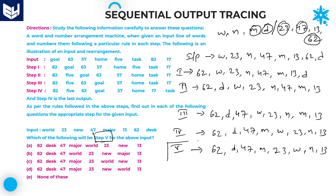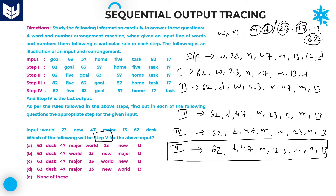This is our required answer for step 5: 62, desk, 47, major, 23, world, new, 13. Checking the options: option C shows 62, desk, 47, major, 23, world, new, 13. Option C is the right answer for this question.